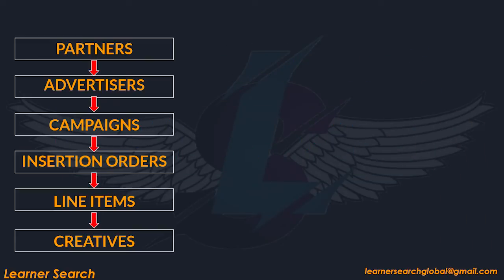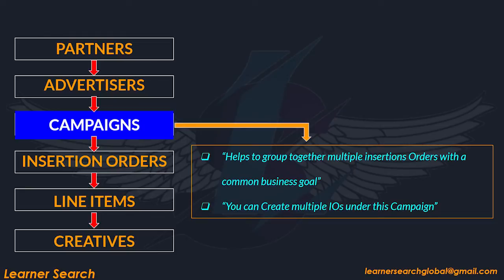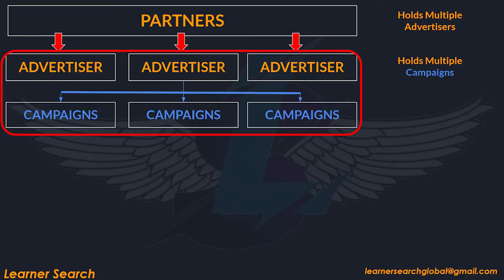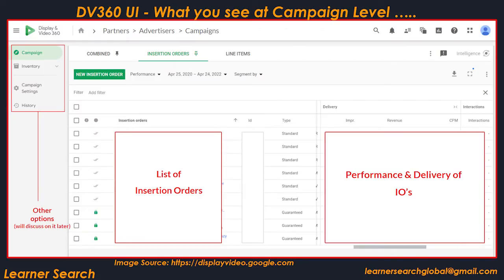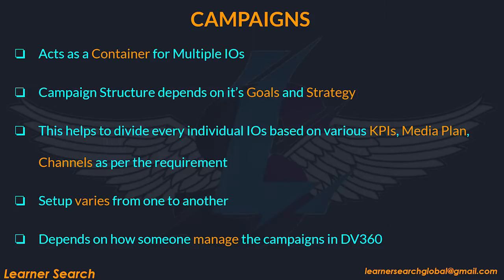Next, campaigns. Campaigns are created under the advertisers and help to group together multiple insertion orders with a common business goal. You can create multiple IOs under a campaign. From our previous example, partners hold a number of advertisers, advertiser holds a number of campaigns, and each campaign holds multiple insertion orders. IOs created under the campaign are listed here, and you can also see performance and delivery of each IO. Campaigns act as a container for multiple IOs. Campaign structure depends on its goals and strategy. This campaign level helps to divide every individual IO based on various KPIs, media plan, and channels as per the requirement.